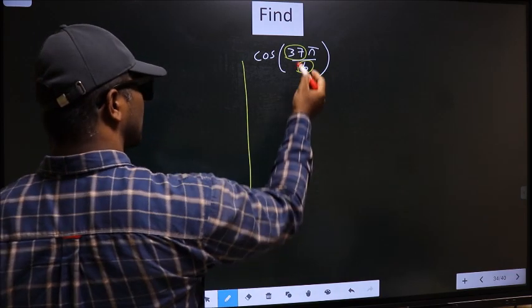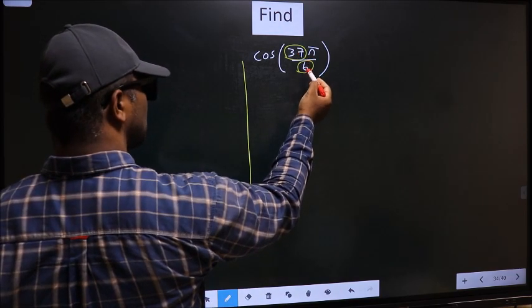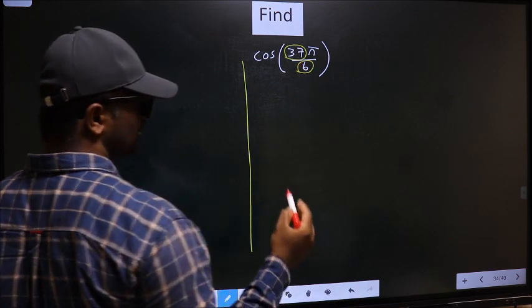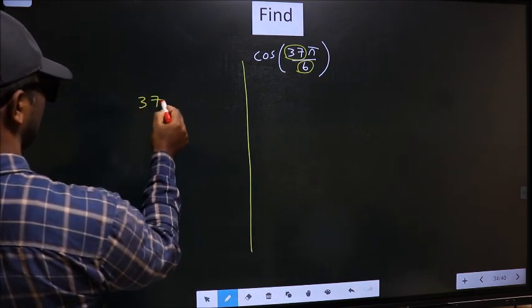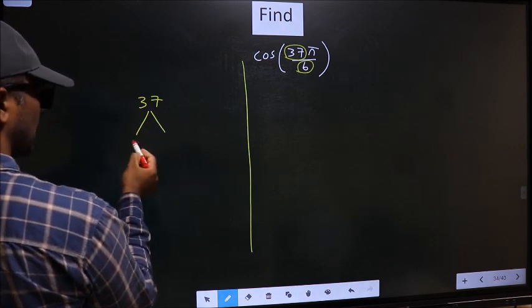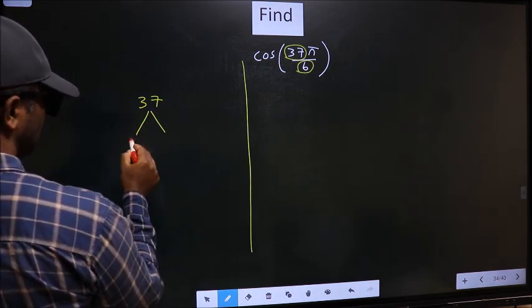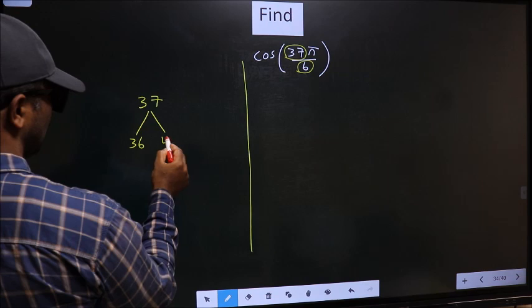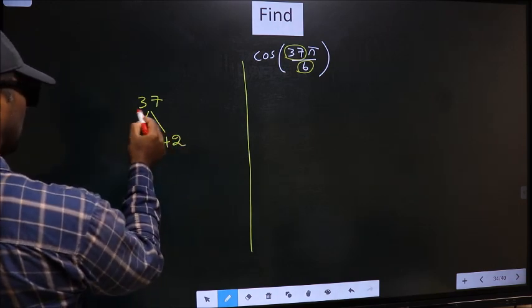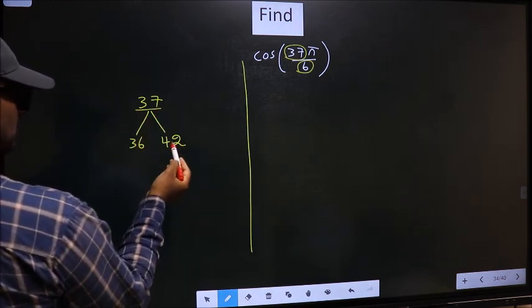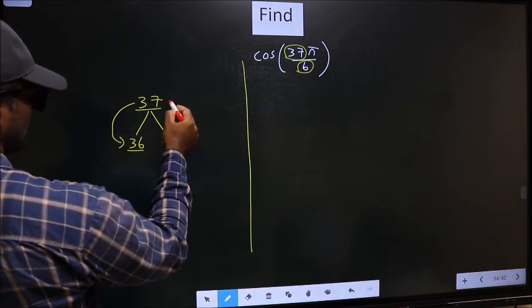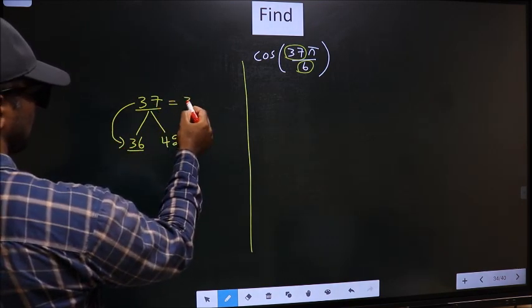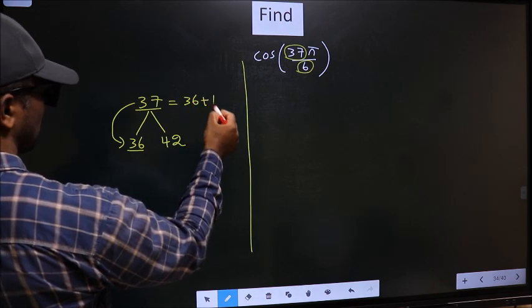Now you should check - 37 is close to which multiple of 6? Here you should write multiples of 6: that is 36 and 42. Now 37 is close to which multiple? This is close to 36. So now 37 should be written as 36 plus 1.